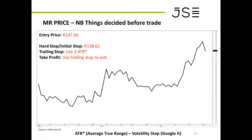Instead of saying you want to exit at 150 or 160 rand, which might just be a guess, you use the trailing stop to actually exit the position — letting your winners run. The moment the share starts turning down after a nice upswing, it will be stopped out by your trailing stop. For instance, you could have gotten out around 150–160 rand when it dipped, but the trailing stop keeps you in through that volatility, as the next few slides will show.